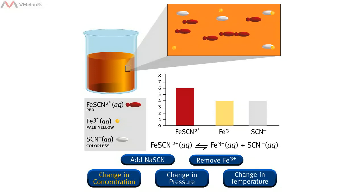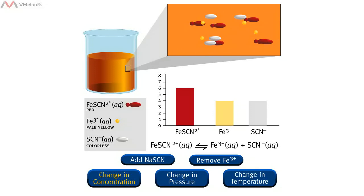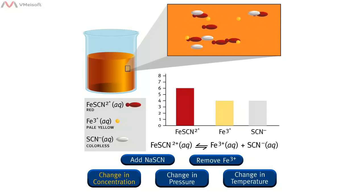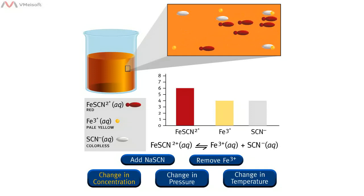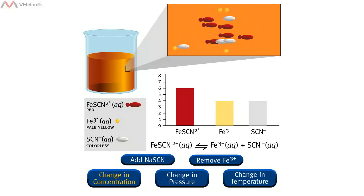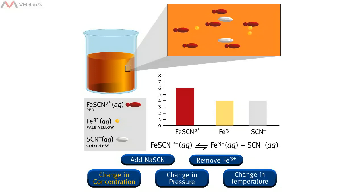Fe(SCN)²⁺ aqueous, which is red, is in equilibrium with iron 3+ ions, which are pale yellow, plus SCN⁻ aqueous, which is colorless, as given by this chemical equation. Click on one of the buttons to add sodium thiocyanate or remove iron 3+ ions from the solution.